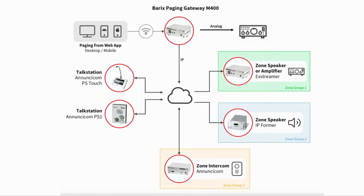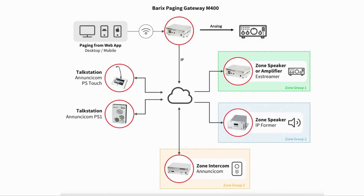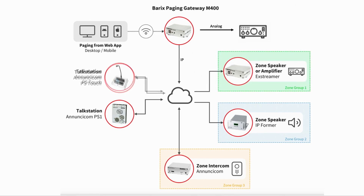Do you have a need for zone-based paging? Let me explain how the paging gateway fits into the Barix IC paging solution. With Barix you can build a zone-based paging solution using your standard IT infrastructure. Barix IP audio endpoints include a new IP former that turns any speaker into an IP speaker, the Exstreamer M400 with line out, the upcoming Exstreamer MPA 400 with up to 40 watts, and the PS touch master station. Zone selection is of course supported by the paging gateway too, and all this at an attractive price point.